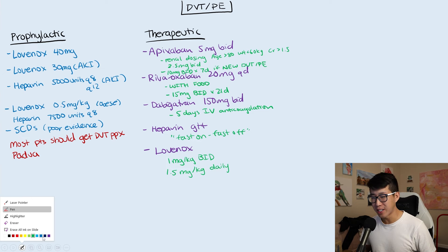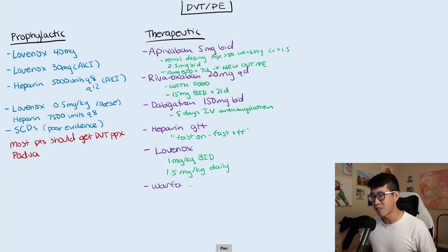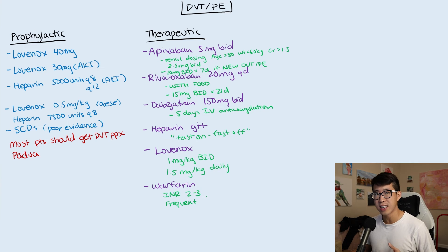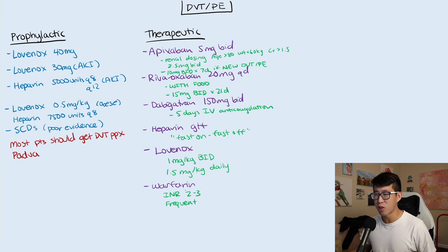We also have warfarin, or Coumadin, which is a vitamin K antagonist. Generally, you should try not to start patients on warfarin. It requires frequent lab monitoring, an INR goal of around 2 to 3, and has many drug-drug interactions. Even a dietary change — like eating more spinach or vegetables with vitamin K — can throw off their INR. So ideally, avoid warfarin if possible.